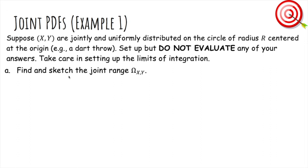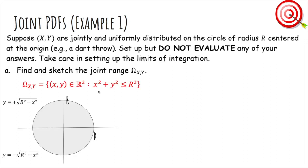First, let's find and sketch the joint range. Here is the joint range - this is what a dartboard looks like. The set of possible values that the dart can land, assuming we always hit the dartboard, is all the points (x,y) such that x² + y² ≤ R². That's the equation of a circle. The top half is y = √(R² - x²), and the bottom half is y = -√(R² - x²).